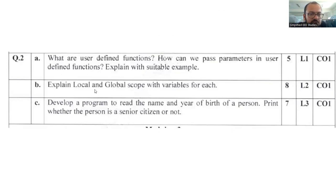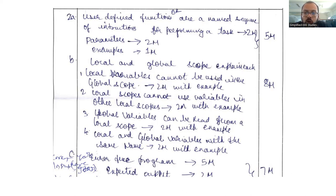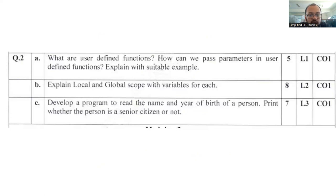Question 2B: explain local and global scope with the help of a variable for each. Weightage is eight marks. Local scope is related to variables defined within a function — if a variable is defined inside a function, that is called local scope. If a variable is defined outside the function, that is called global scope. You have to follow these instructions when writing about local and global scope, and you can also give some examples.